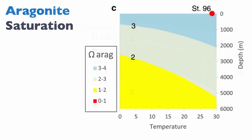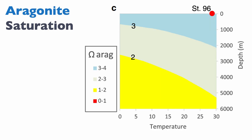Aragonite has a much lower saturation in general than calcite. At the surface ocean, across temperatures between 0 and 30 degrees, we have a saturation of 3 to 4 for aragonite. But in the deep ocean, we are down to 1 to 2 — very low saturation, barely saturated with respect to aragonite. The key is to keep in mind that calcite will be more oversaturated in the modern ocean than aragonite.